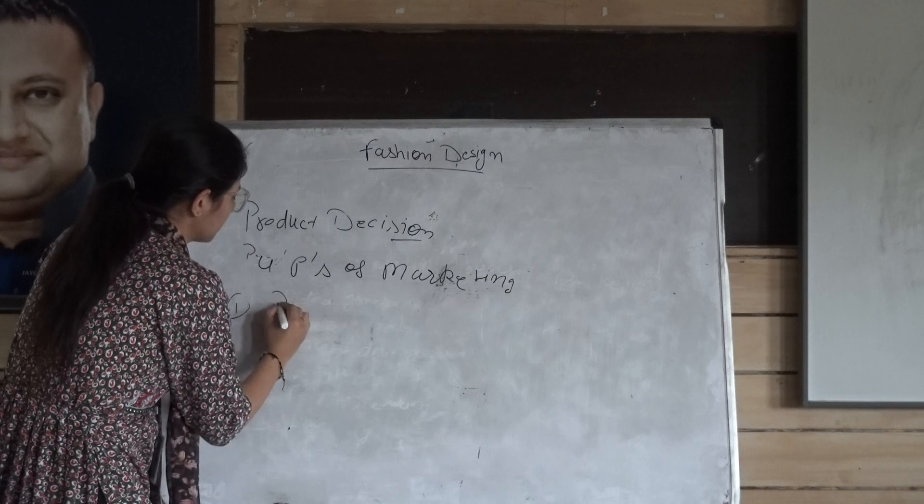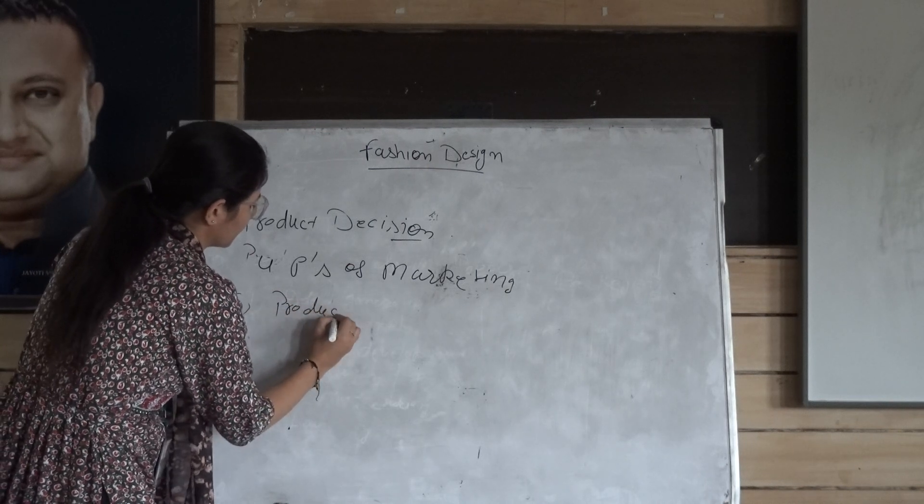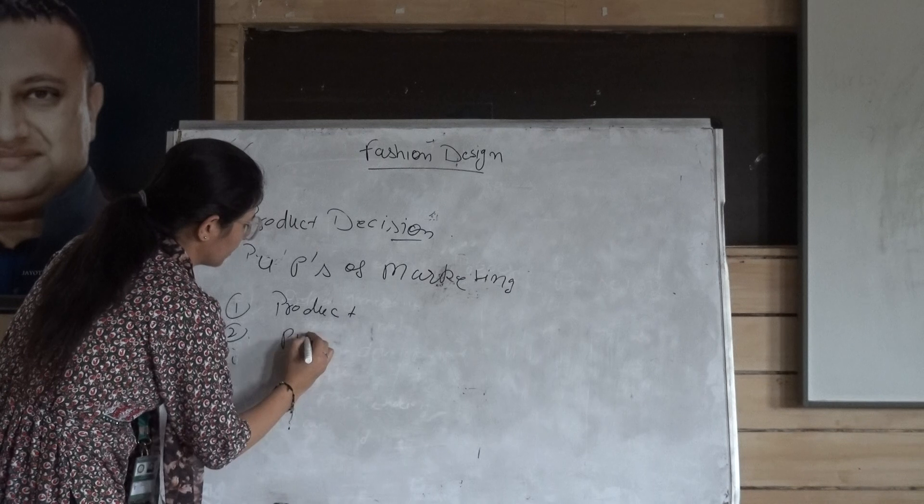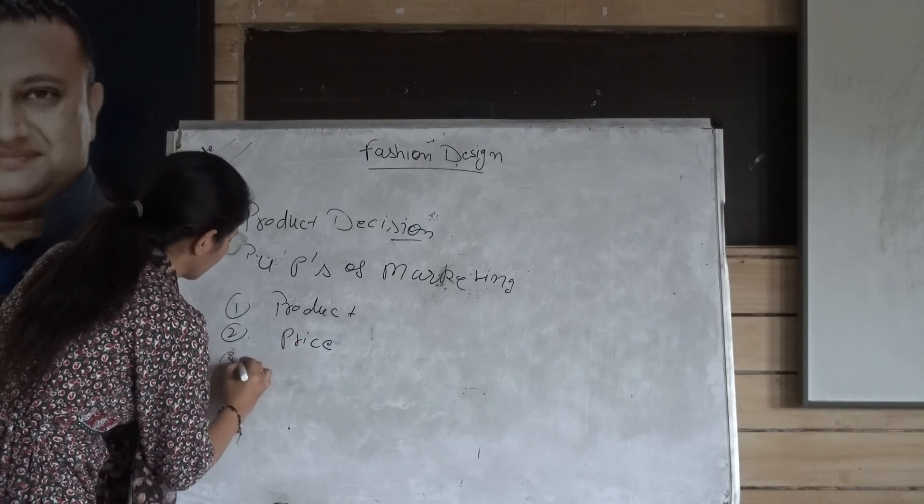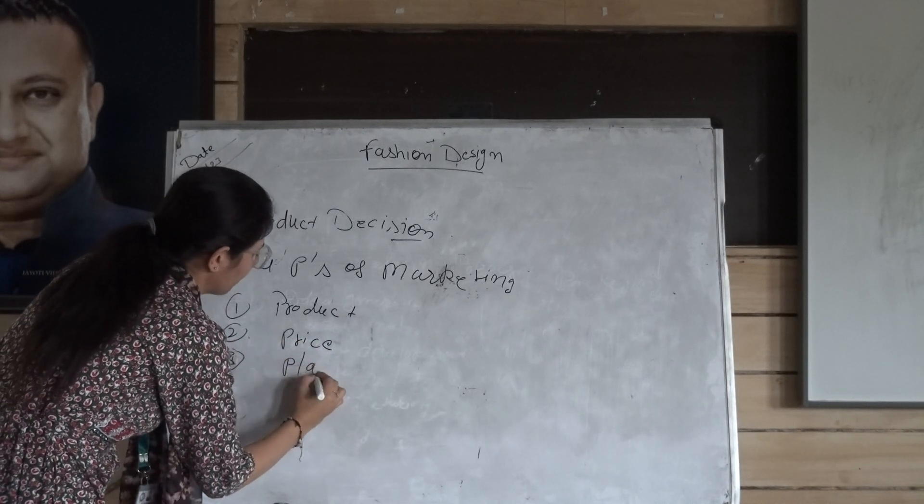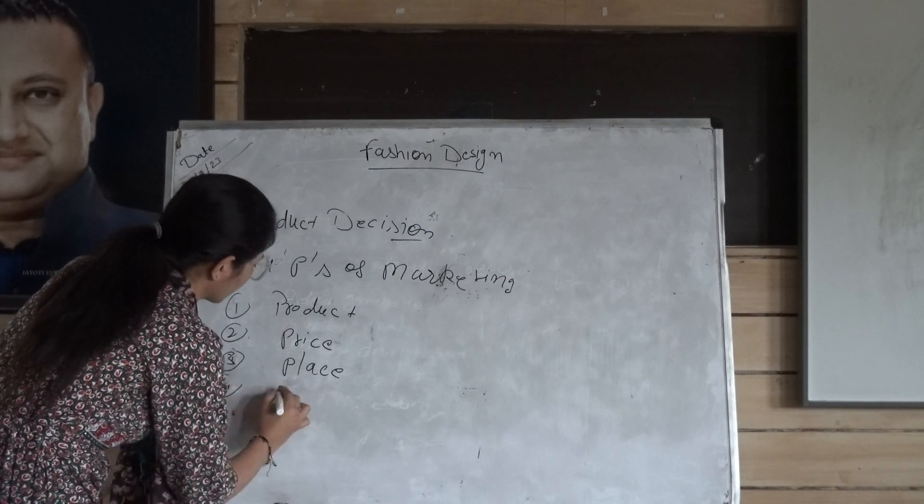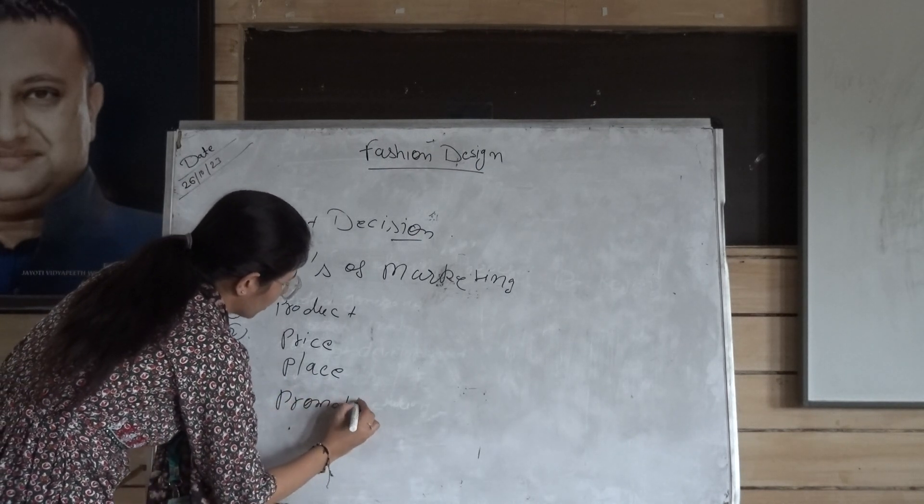Now we move to the 4 P's of Marketing. First one is Product, second one is Price, third one is Place, and fourth one is Promotion.